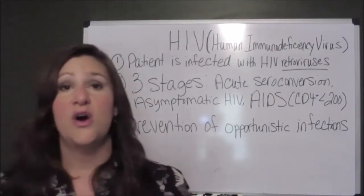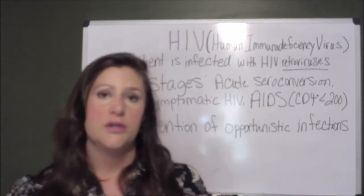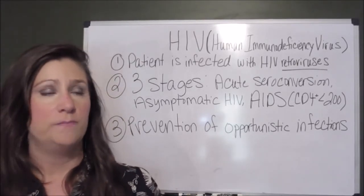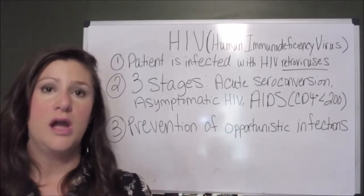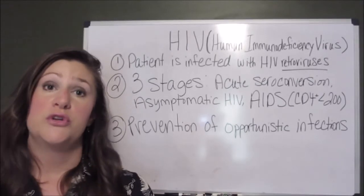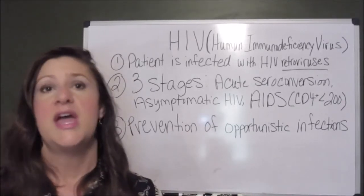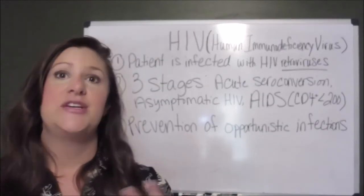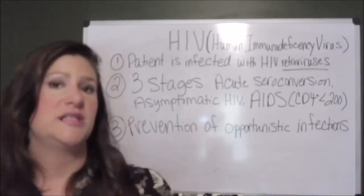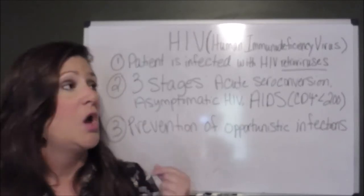At that point the patient is open to all kinds of opportunistic infections. Since our CD4 cells are T cells, we are looking mainly at viruses and fungal infections — as opposed to B cells, which produce antibodies and deal more with bacteria. When our T cells are affected, we are going to have more problems with fungus and viruses.